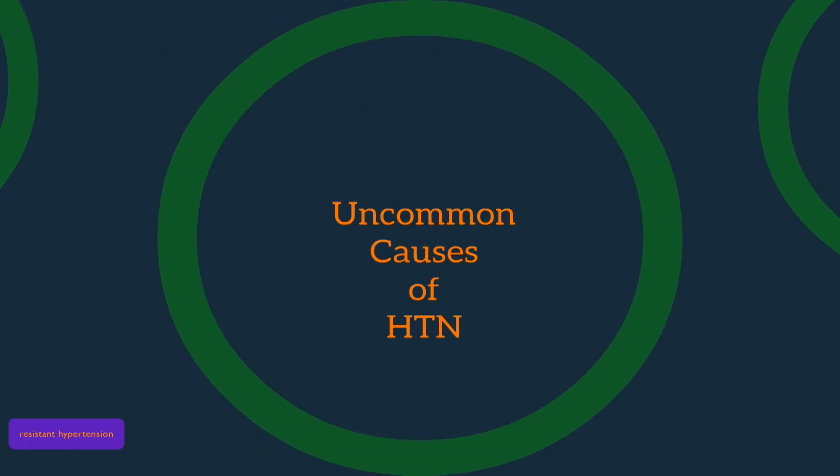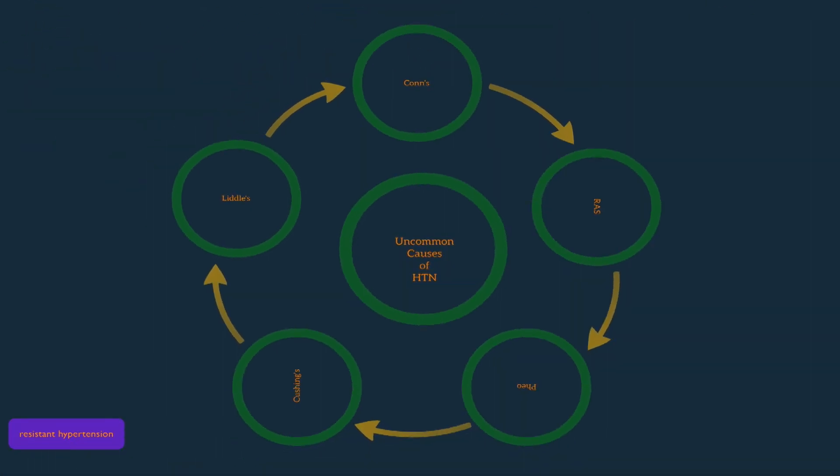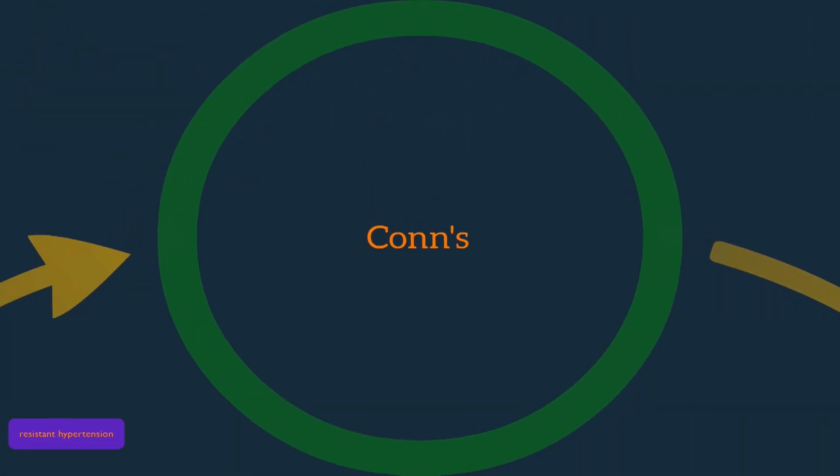So let's investigate some of the uncommon causes of hypertension, one by one, and some of the salient features of each. The first is Conn syndrome. Conn syndrome is the presence of an aldosterone-producing adenoma in the adrenal gland, which leads to hypertension and hypokalemia. If one sees a patient with low potassium, no presence of diuretic, and hypertension, this diagnosis should be entertained.